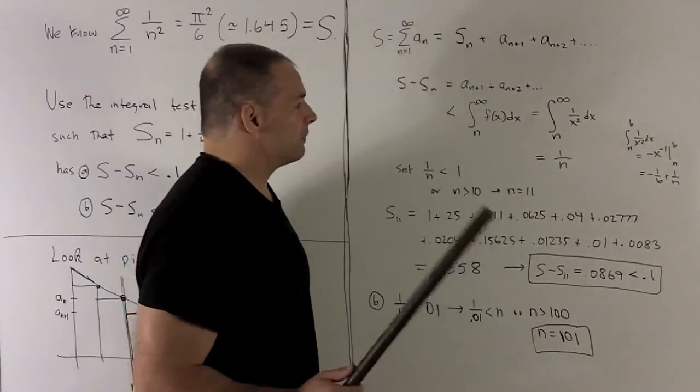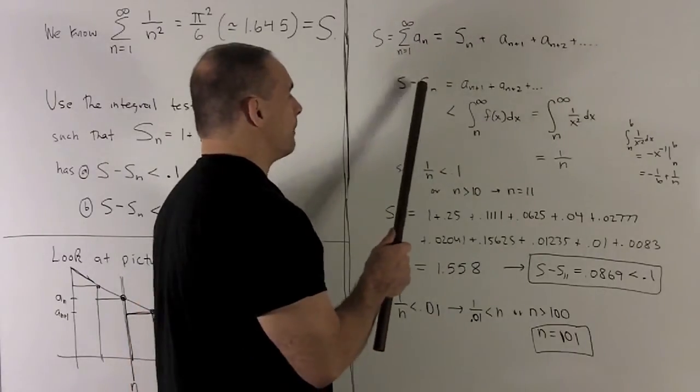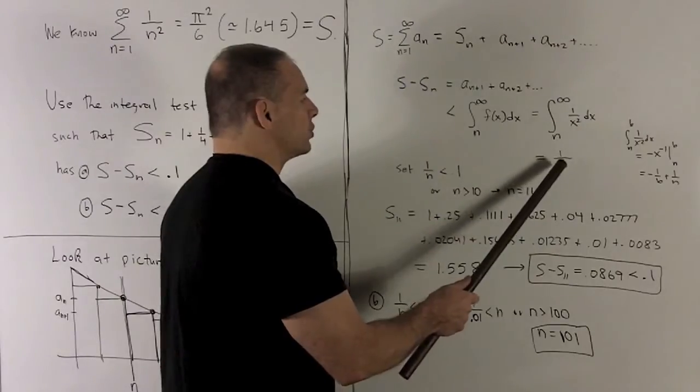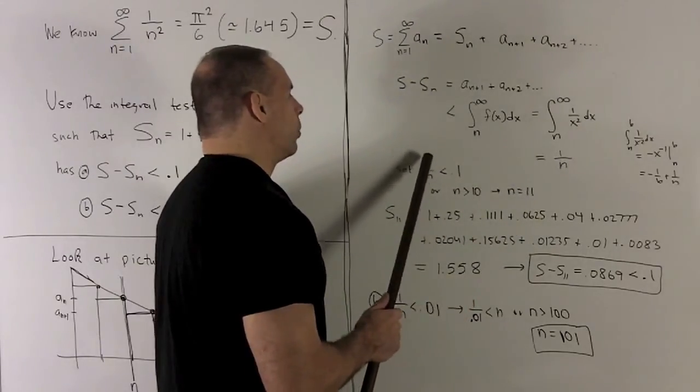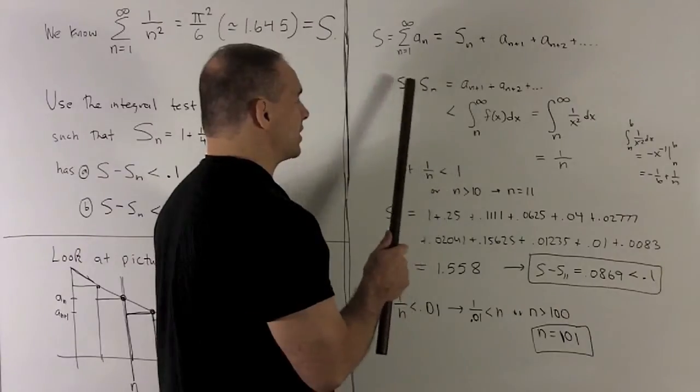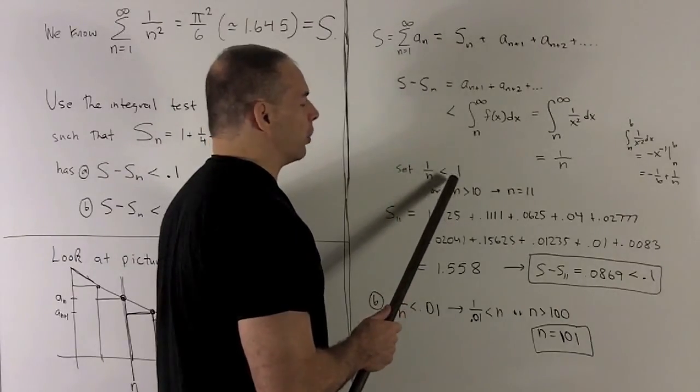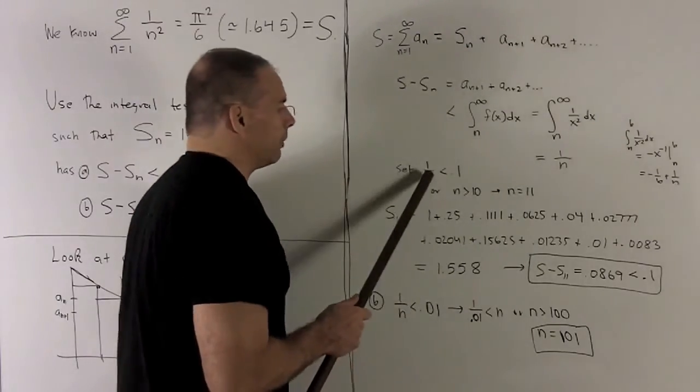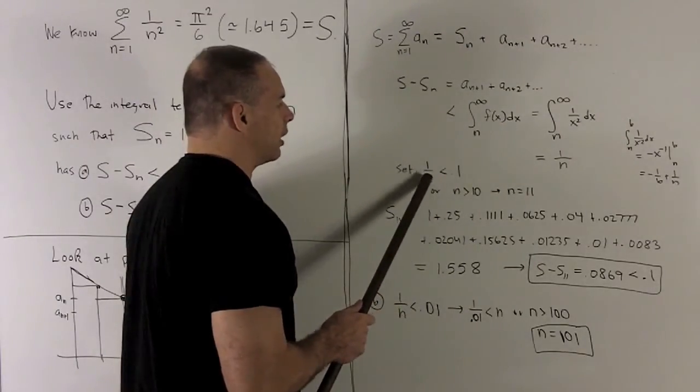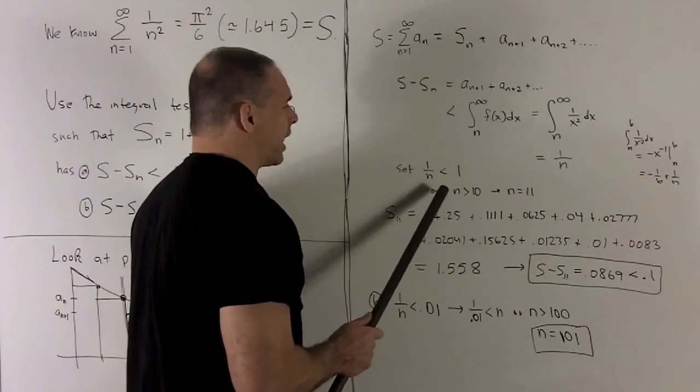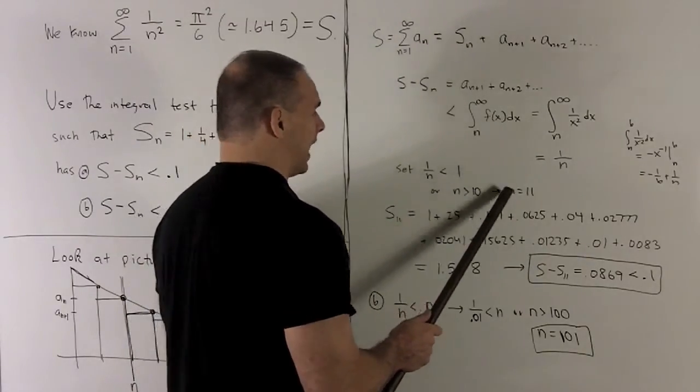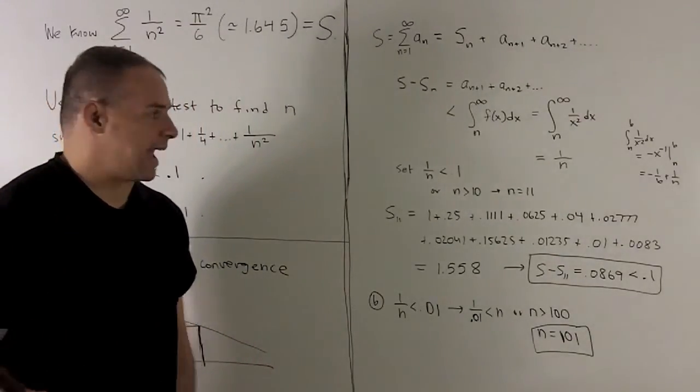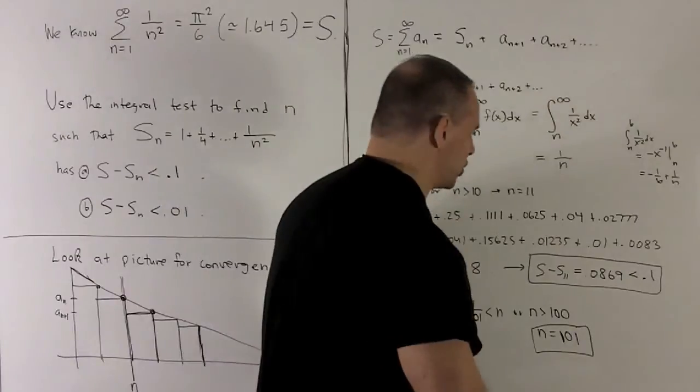So what's the idea here? I've just figured out that s minus s sub n will be less than 1 over n. So if I find an n such that 1 over n is less than 0.1, then s minus s sub n is also going to be less than 0.1. So what will that mean? Well, if I just put the 0.1 down here, the n up there, that's saying I want an n that's bigger than 10 or n equal to 11. Now, that's my answer, n equals 11. Let's check that.